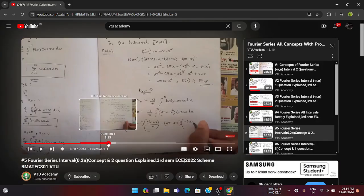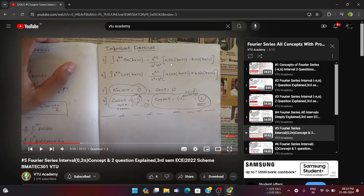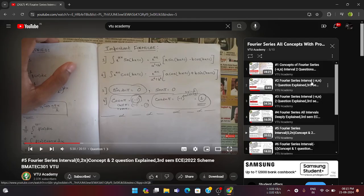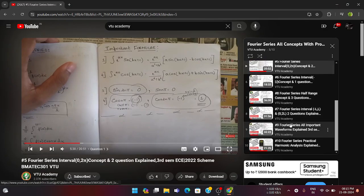For the interval zero to 2π, here are some important formulas related to solving problems — particularly formulas related to exponential functions. These formulas are very important for Fourier series in the interval zero to 2π. One question will be fixed from this interval. In the playlist, the fifth video covers zero to 2π, and the first and second videos cover minus π to π.